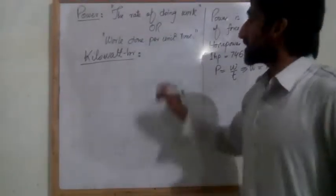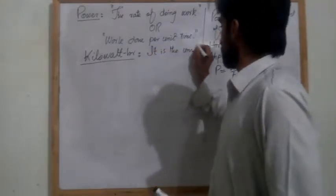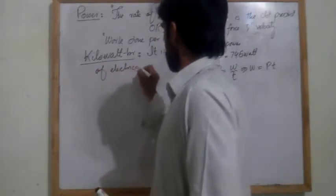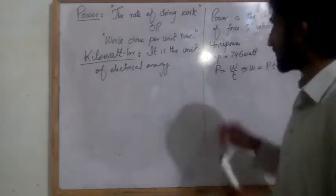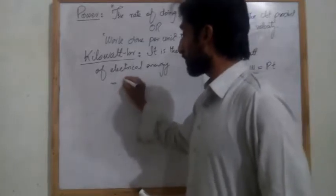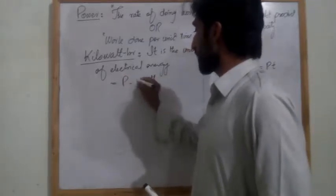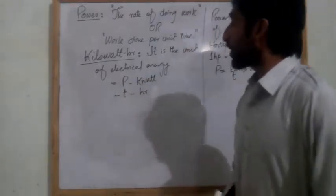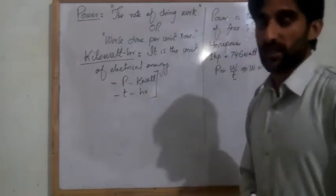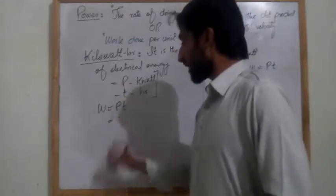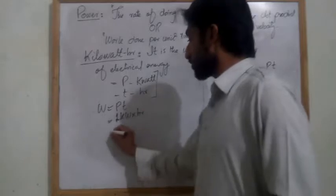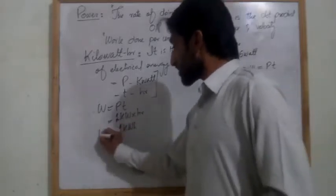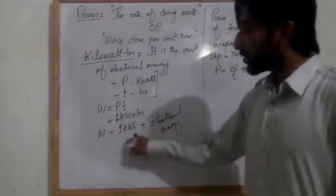Kilowatt hour hamaare paas electrical energy ki unit hai — it is the unit of electrical energy. If we take power in kilowatt and time in hours, we get the unit called kilowatt hour, which is the electrical energy unit.